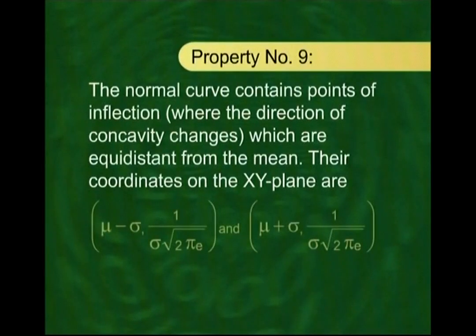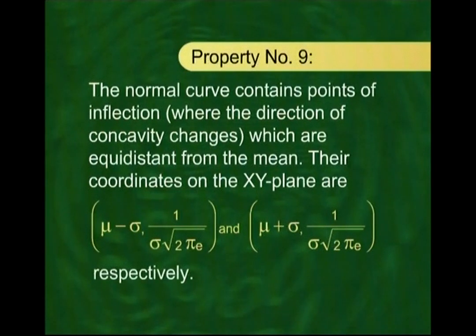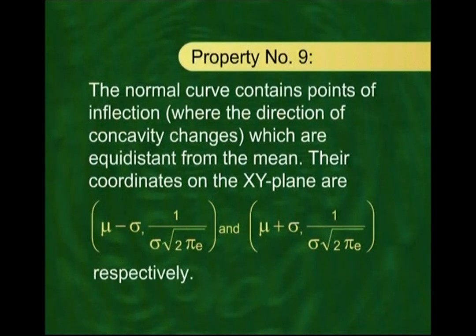The next property concerns the points of inflection. The normal curve contains points of inflection where the direction of concavity changes, and these points are equidistant from the mean. Their coordinates on the xy-plane are (mu − sigma, 1/(sigma * sqrt(2*pi*e))) and (mu + sigma, 1/(sigma * sqrt(2*pi*e))).